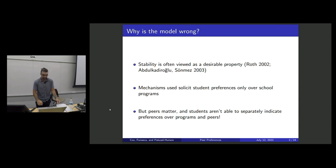In school choice, often stability is the number one desirable property. And the mechanisms that we use to solicit student preferences ask for preferences over school programs, just over school programs. But peers matter. Students aren't able to separately tell us their preferences about peers and about the programs they want to attend.